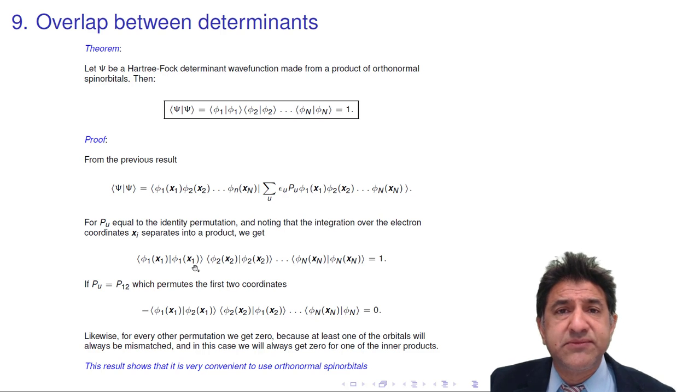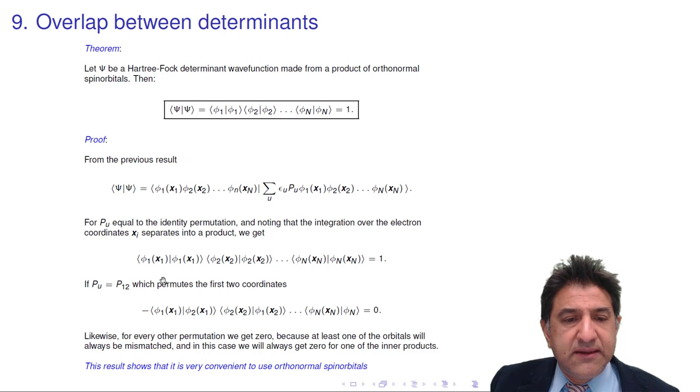Now each of these is orthonormal, by assumption. So this is a product of 1 times 1 times 1, which equals 1. That's great.